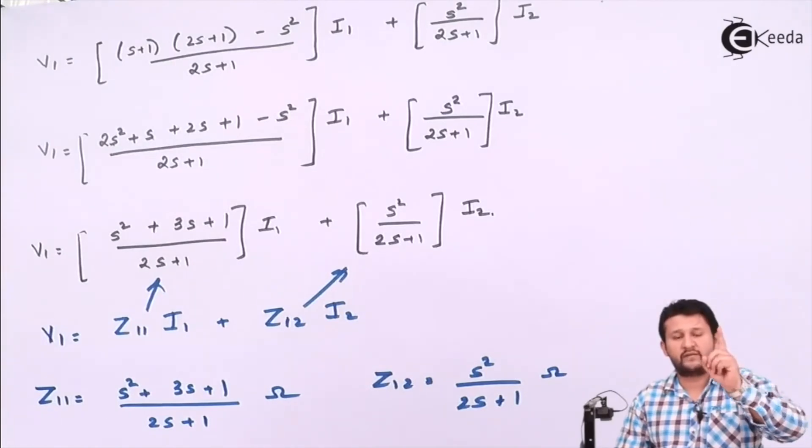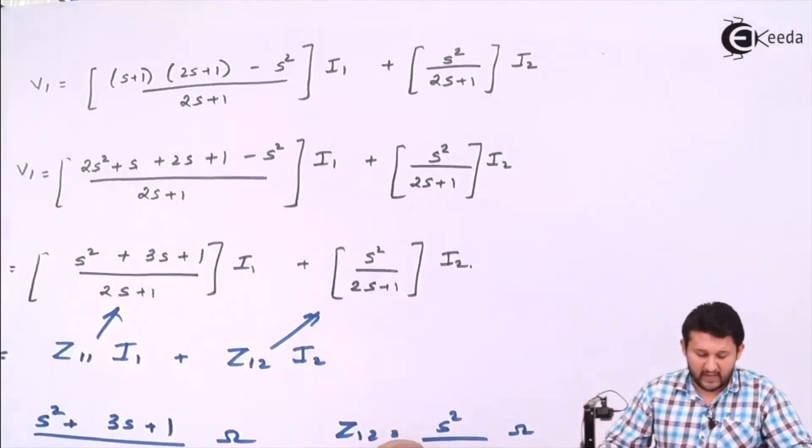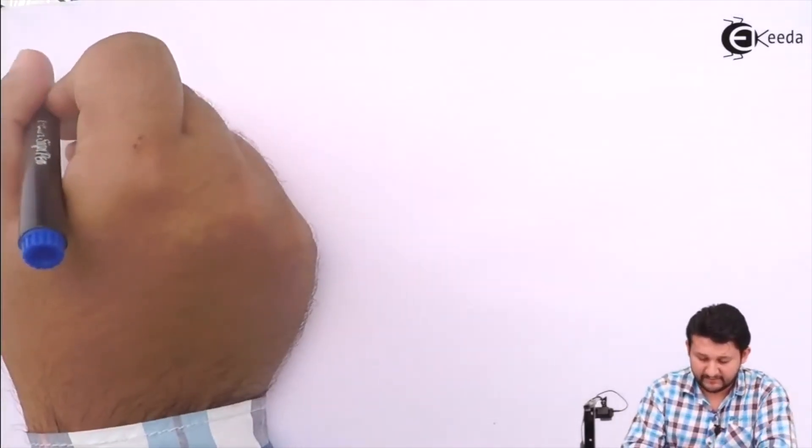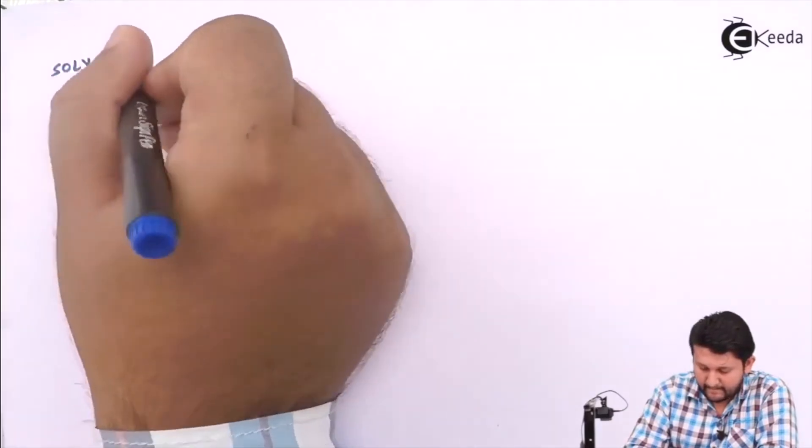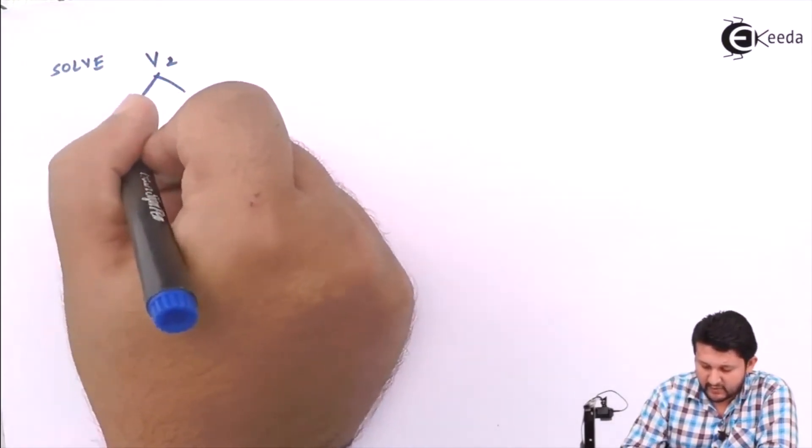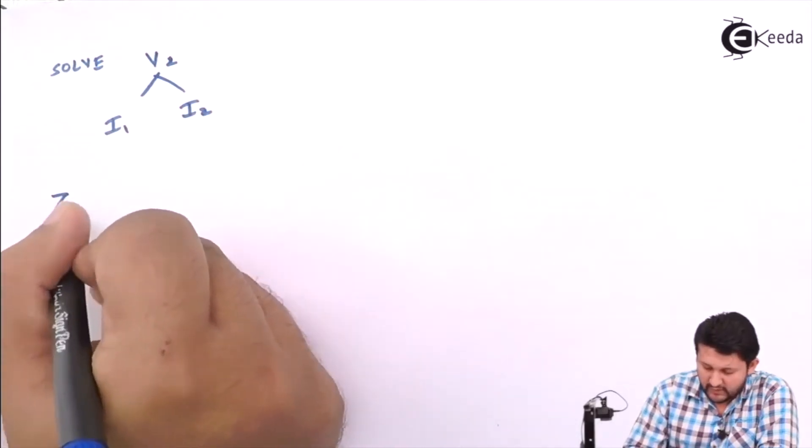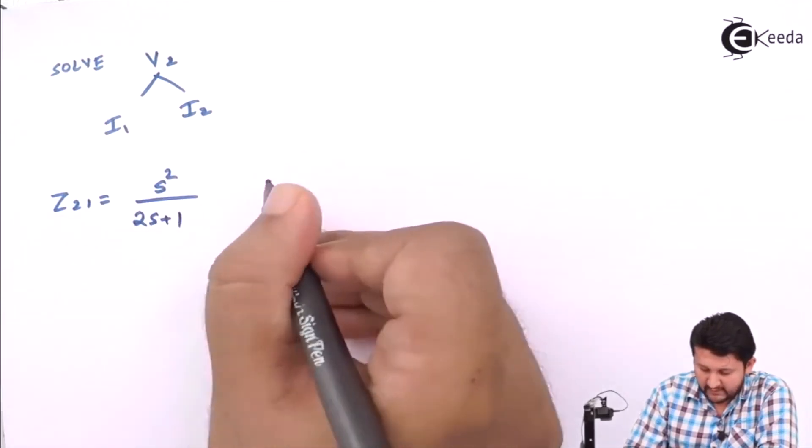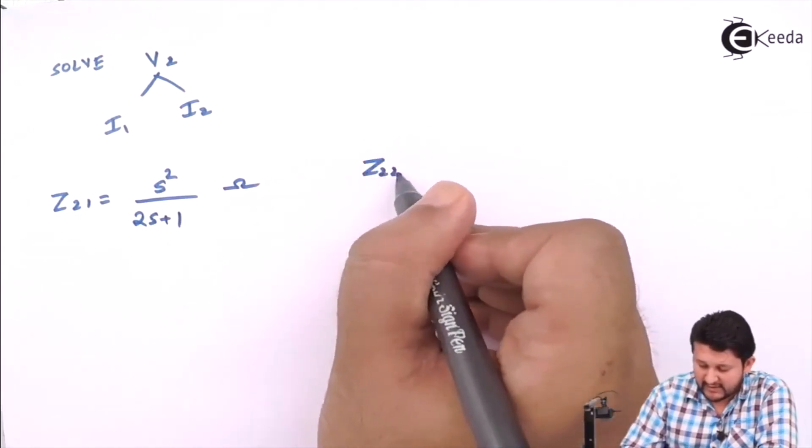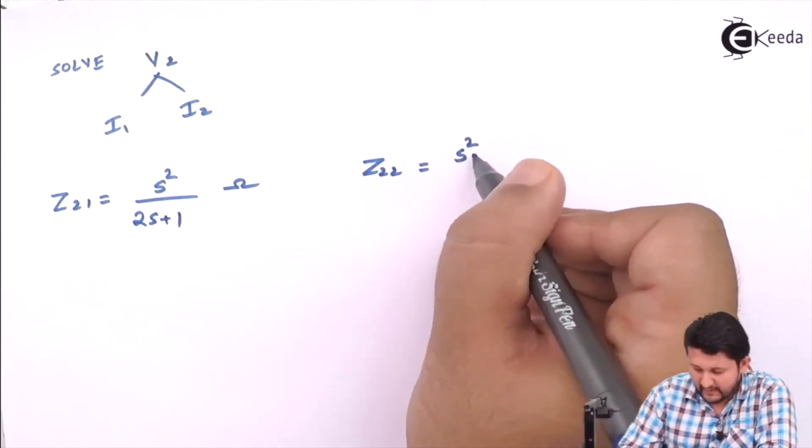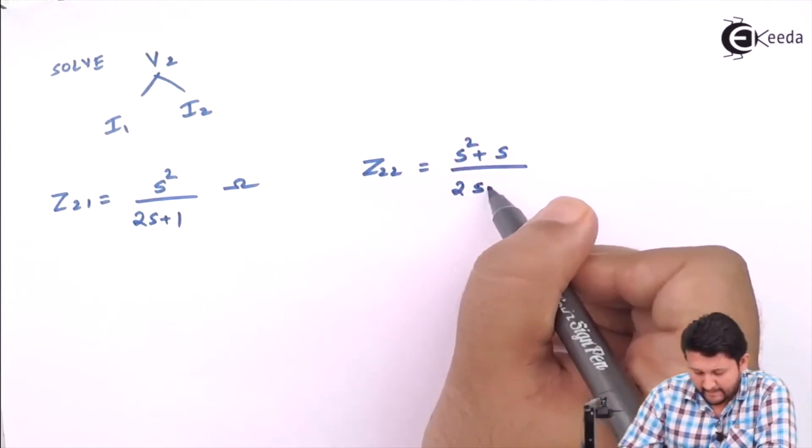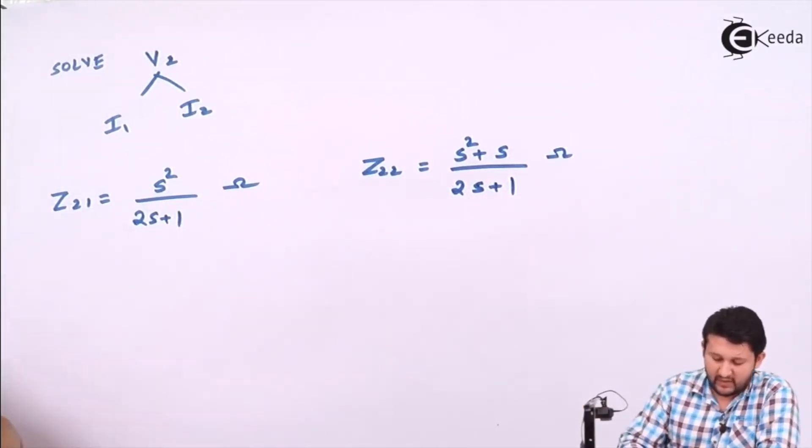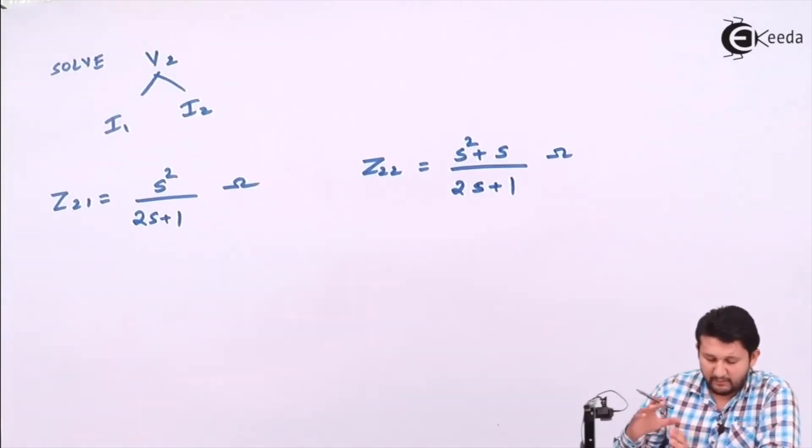Similarly, the second part—I will only give you the answers using the equation of I3 and equation number 2. You should get V2 in terms of I1 and I2. The answer which you should be getting is: solving V2 in terms of I1 and I2, your Z21 should equal s²/(2s+1), and your Z22 will be (s² + s)/(2s+1).